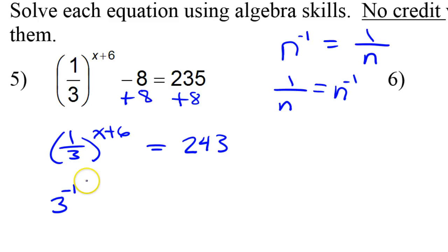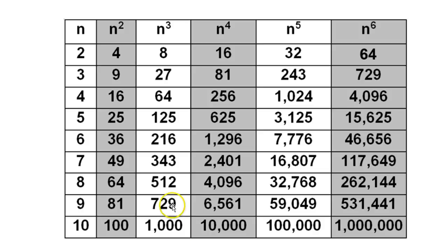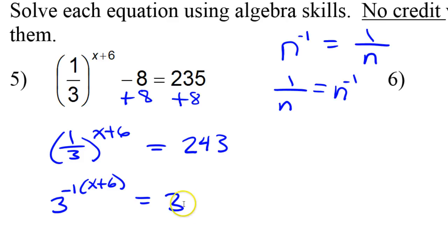I've still got this x plus 6, which I better put in parentheses to remind me to distribute later. Meanwhile, I really need this to be 3 to some kind of a power. I'm going to use my exponent table, which you are allowed to use. I need it to be 3 to a power, so I'm going to start with 3 and scan across until I get to 243. I can see that 3 to the 5th power is 243, so I can write 243 as 3 to the 5th power.